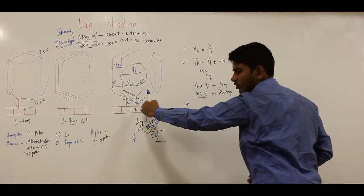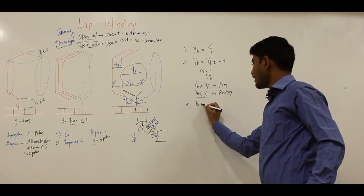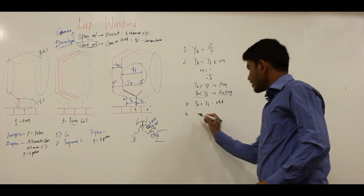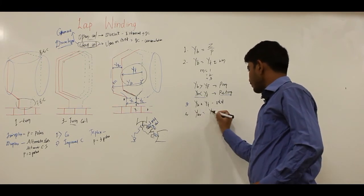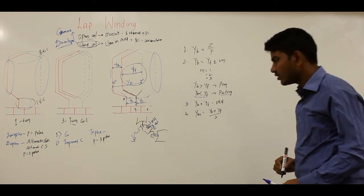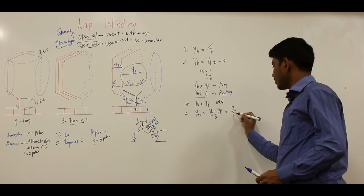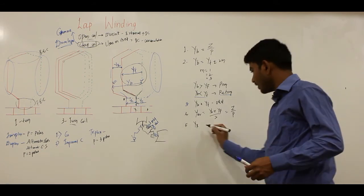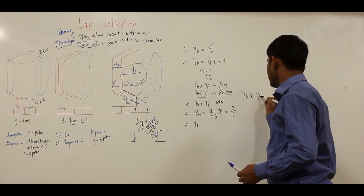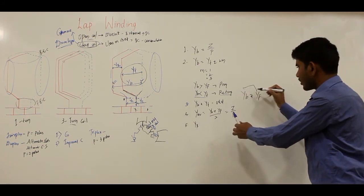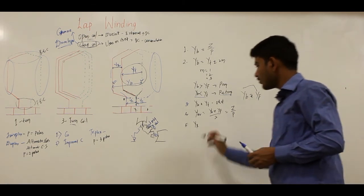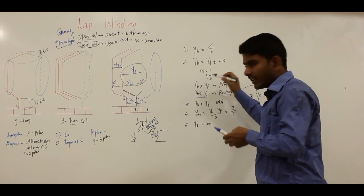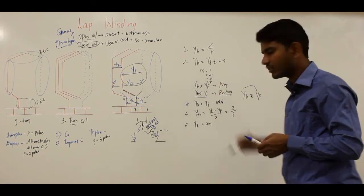Third point: back pitch and front pitch must be odd numbers. Fourth point: the average pitch, given by (YB + YF) / 2, should equal the pole pitch (Z/P). Fifth point: the resultant pitch YR is always even, being the difference of two odd numbers YB and YF. YR equals 2m, where m equals 1, 2, 3 for simplex, duplex, and triplex, and 4 for quadruplex winding respectively.